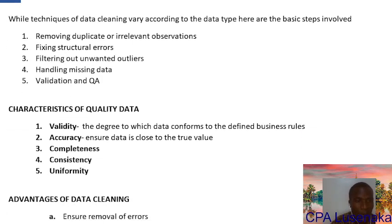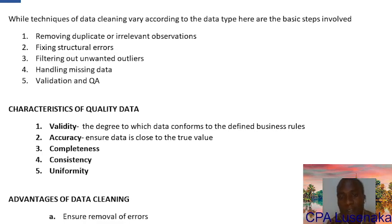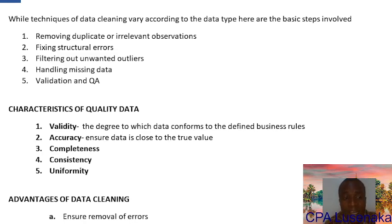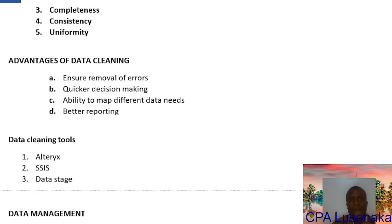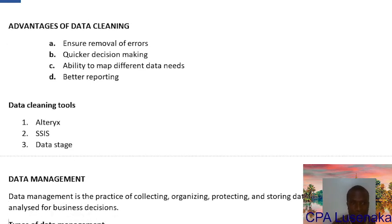The characteristics of quality data are summarized using the acronym VAWCCU: Validity — the degree to which data conforms to defined business rules; Accuracy — the data must be true; Completeness — is it complete; Consistency — does it flow uniformly from one point to another; and Uniformity — is it uniform. If the data fulfills these characteristics, it is quality data. The advantages of data cleaning include: ensuring removal of errors, quicker decision-making, ability to map out different data, and better reporting.